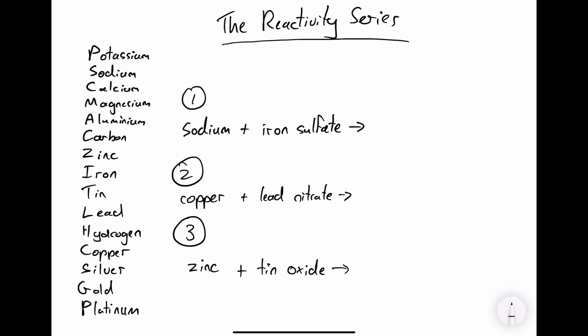The first reaction is sodium plus iron sulfate. Sodium and iron are both in the reactivity series, and we can see that sodium is more reactive than iron, so sodium is going to displace iron from its compound iron sulfate. The products are going to be sodium sulfate and iron.